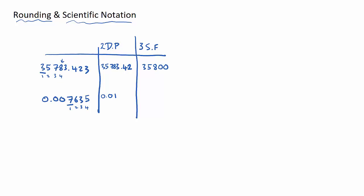For the second number, 0.007635 rounded to three significant figures: the leading zeros are not significant. The 7 is the first significant figure, 6 is the second, and 3 is the third. Do I round the 3 up or leave it the same? I round it up because the next digit, 5, is between 5 and 9. So the answer is 0.00764.